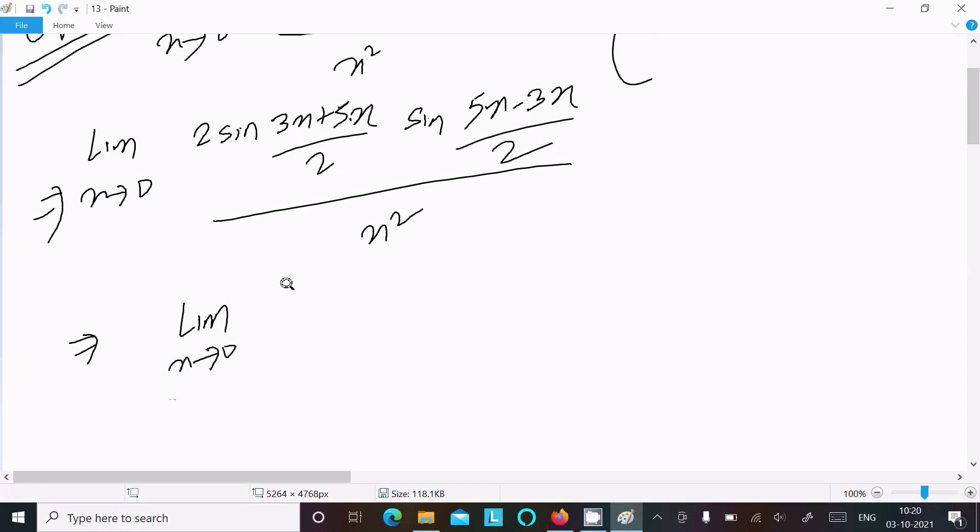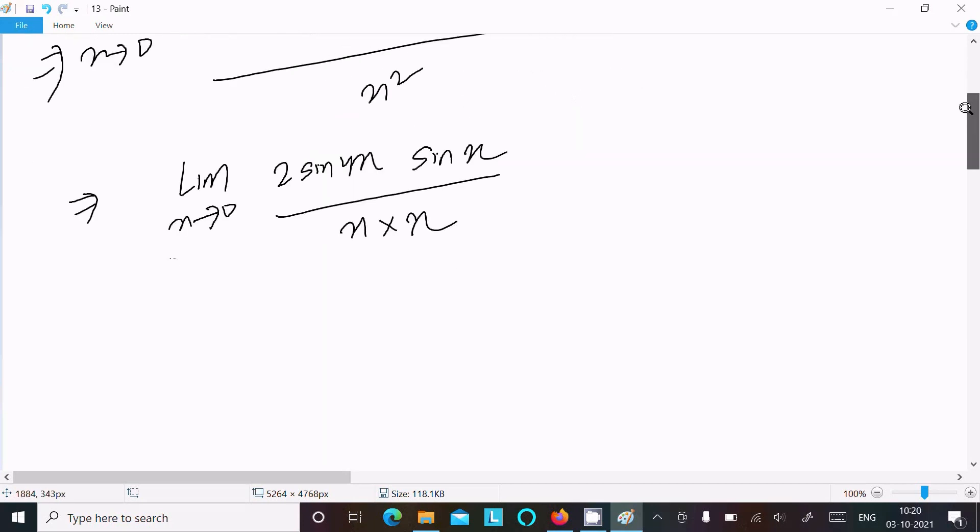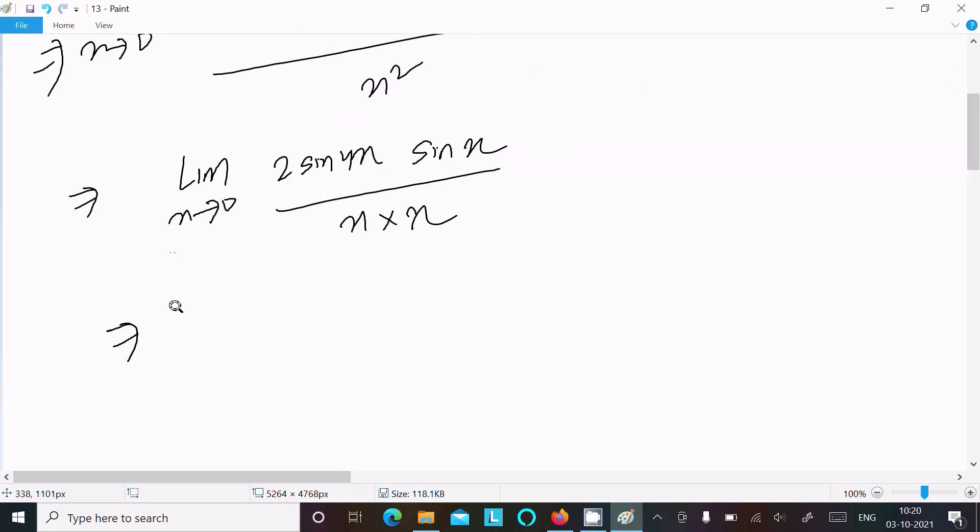8, 8 by 4, 8 by 2 is 4. So 2 sin 4x and here sin, 5 minus 3 is 2, 2 by 2 is x. Here x squared we can write as x into x. So this here limit 2...